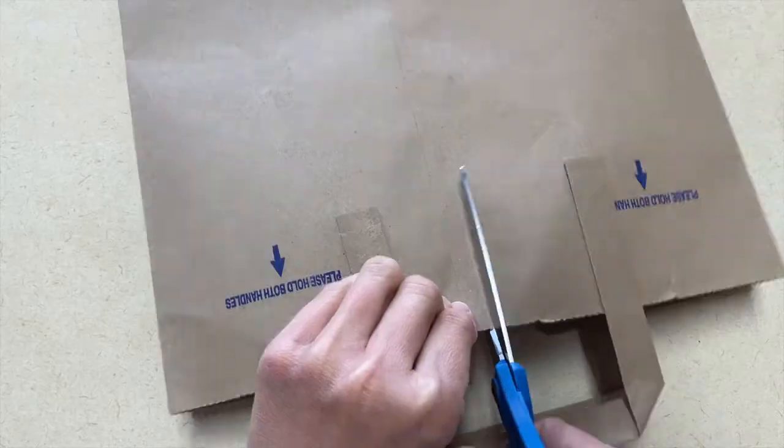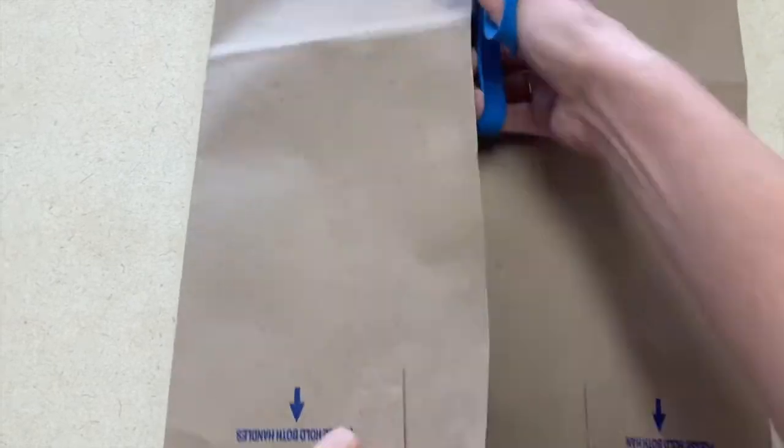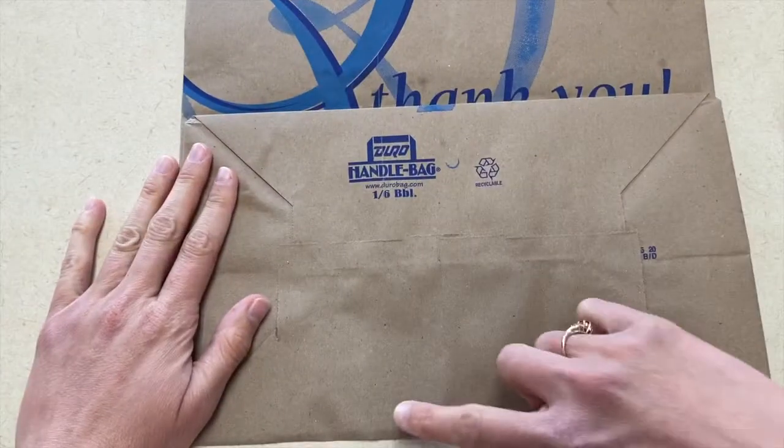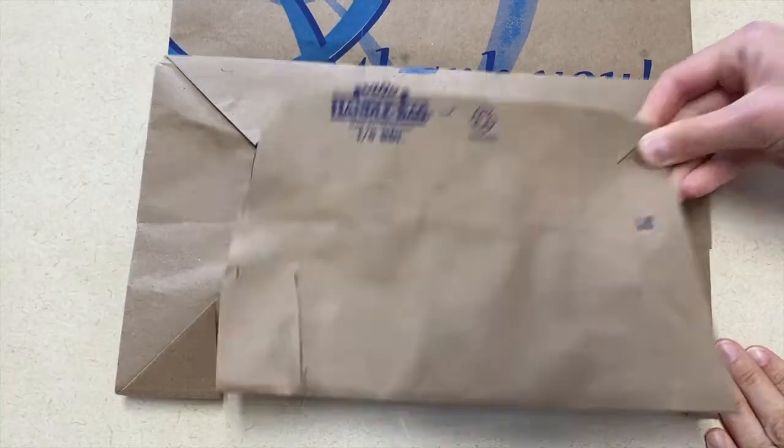Our second activity is to make a zookeeper's vest. You will create this using a brown paper bag, and you will cut it into a vest shape, and they will decorate it however they want to decorate it.